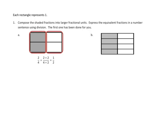Let's see what we start off with. We've got four shaded parts — four out of a total of one, two, three, four, five, six, seven, eight — four out of eight shaded parts.